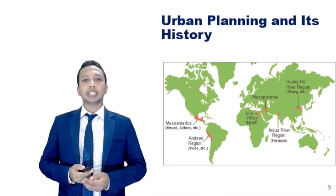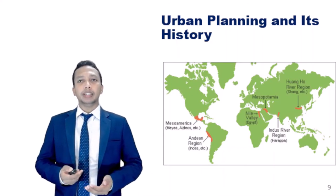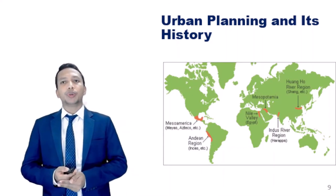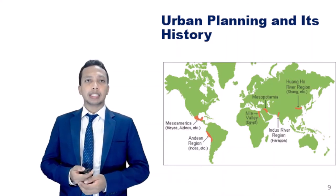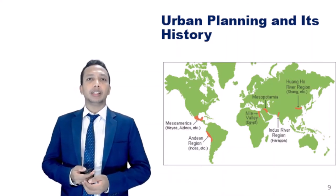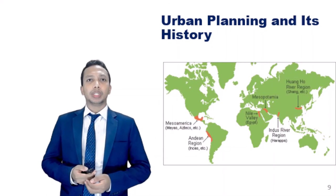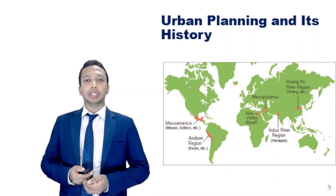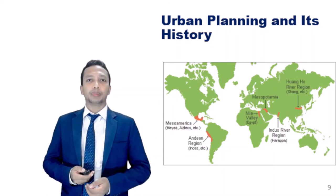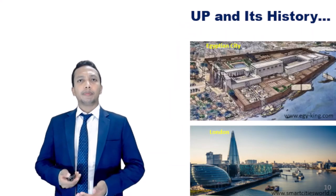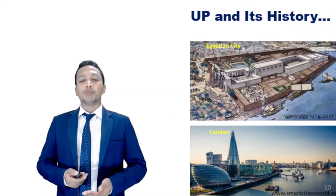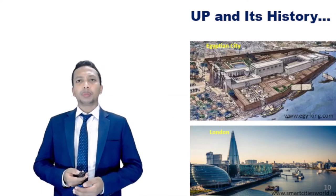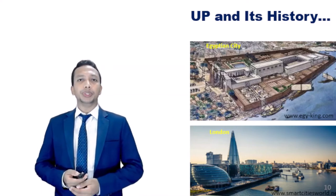Most of the historic cities in India are actually fortified and walled cities, such as Agra, Delhi, Hyderabad, Daulatabad, and Jodhpur. Urban planning transformed into its modern form linked to the industrial revolution.